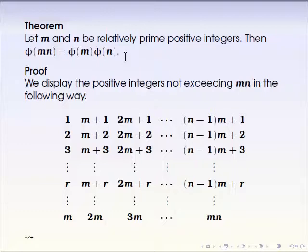This theorem, we're talking about phi of m times n. And at this moment, mn doesn't need to be prime numbers, but they should be relatively prime. Then the result is simply just phi of m times phi of n.